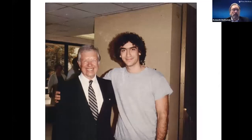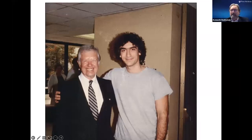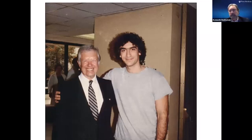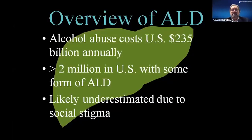Back then, almost all the liver disease we saw were complications related to cirrhosis as a result of alcohol use. Eventually, hepatitis C took over, and then fatty liver started as well. With the advent of curing hepatitis C, we're now starting to see more complications of cirrhosis due to fatty liver and alcoholic liver disease. The pandemic has made things much worse. The U.S. spends over $230 billion taking care of the ramifications of alcohol abuse. It's thought that there are over 2 million people in the U.S. with some form of liver disease due to alcohol, and this may be underestimated due to social stigma.